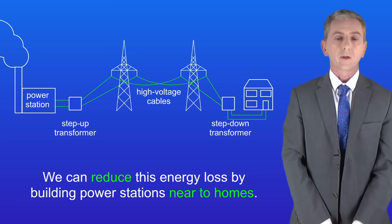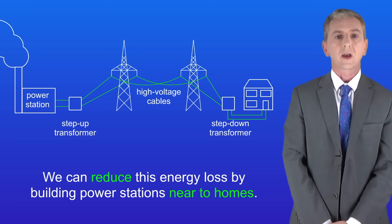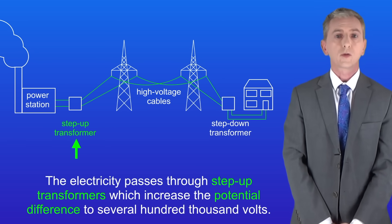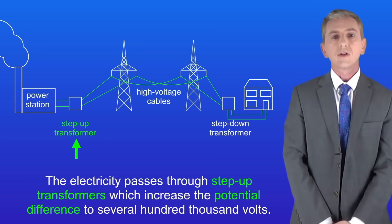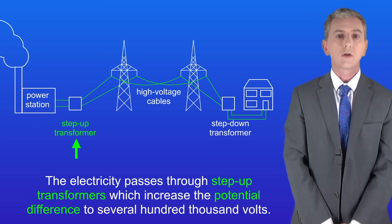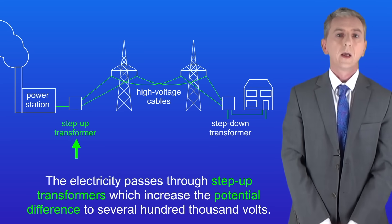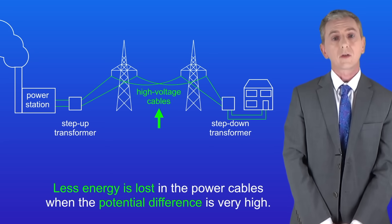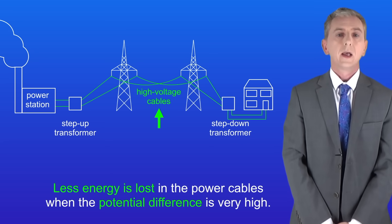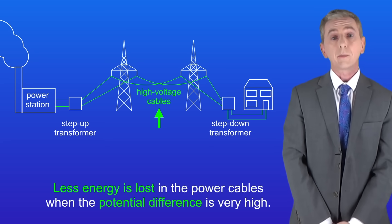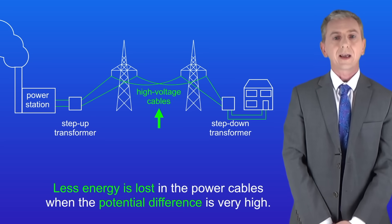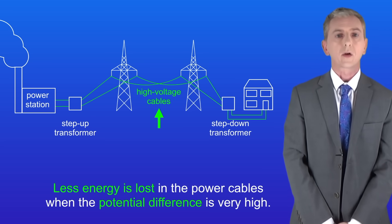The other way is to use transformers, and you could be asked about this in your exams. First, the electricity from the power station passes through step up transformers and they increase the potential difference to several hundred thousand volts. Less energy is lost in the power cables when the potential difference is very high. In the exam, it's really important that you say less energy is lost — do not say less electricity is lost because you won't get the mark.